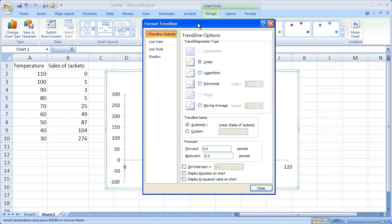It's going to give you the format trend line dialog box, and basically you can just select what it has here.